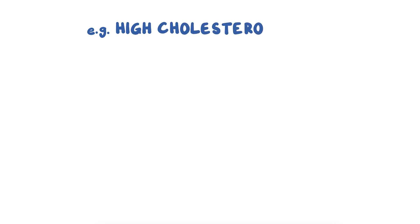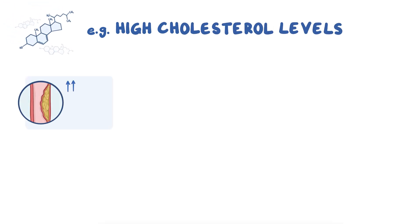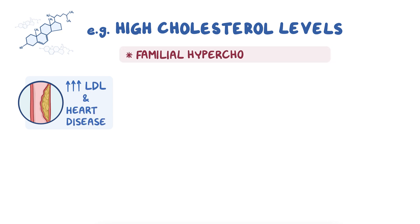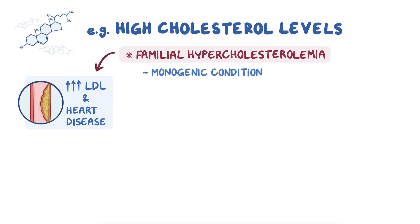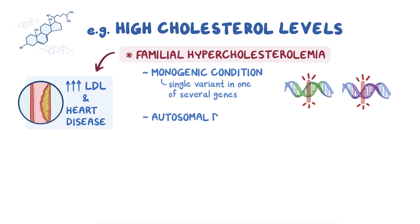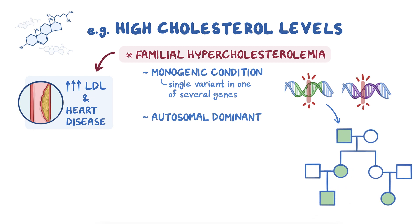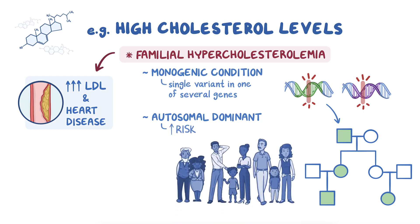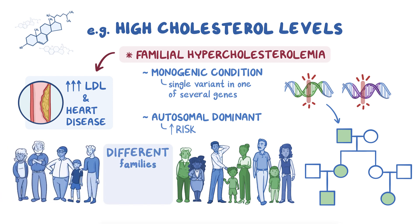Let's take a closer look at monogenic and polygenic causes using high cholesterol levels as an example. One cause of high levels of low-density lipoprotein, or LDL, and subsequent heart disease is called familial hypercholesterolemia. It's a monogenic condition because it's caused by single variants in one of several genes and is usually inherited in families in an autosomal dominant pattern. Someone only needs one causal variant in one of these genes to have familial hypercholesterolemia and be at increased risk for high LDL cholesterol and heart disease. This same variant in the same gene gets passed down through the same family.